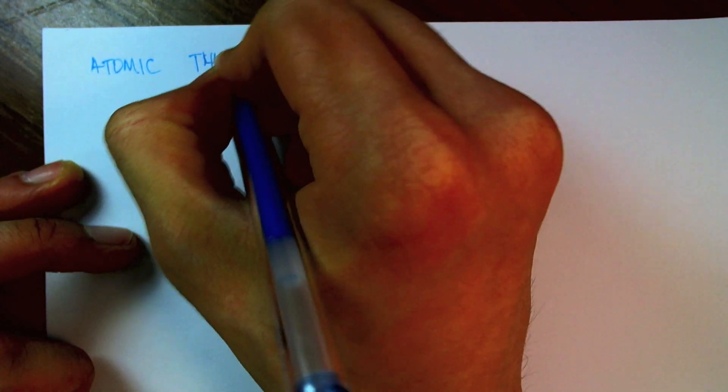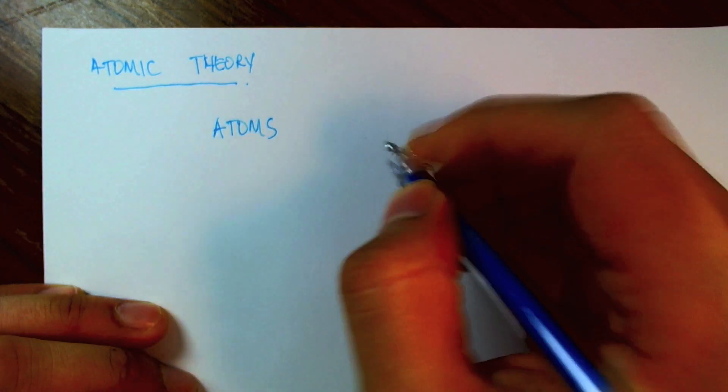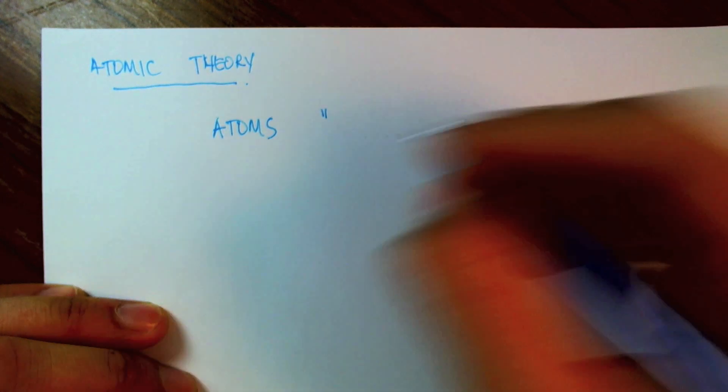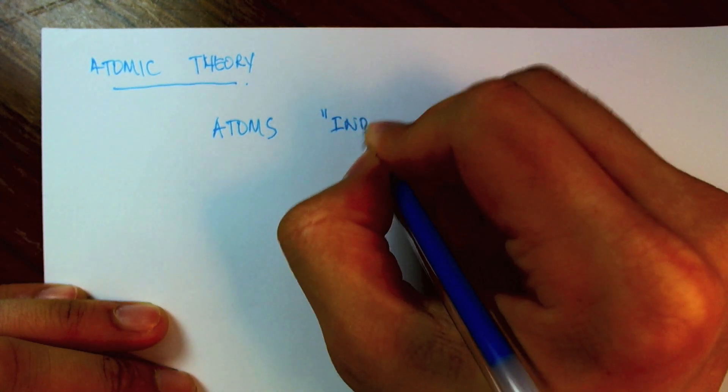He came up with something I like to call the atomic theory, and he asserted that, if I were to do that, if I were to cut a piece of matter up into the smallest pieces available, I wouldn't get nothingness, but rather, I would get these little balls called atoms. And atoms, appropriately, it's the Greek word meaning indivisible.